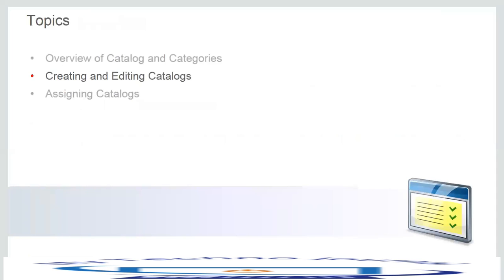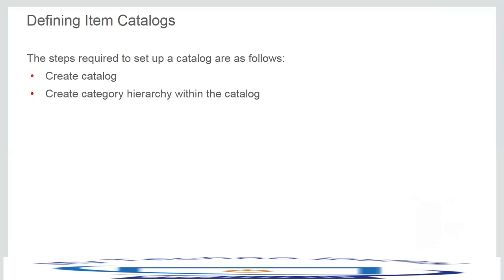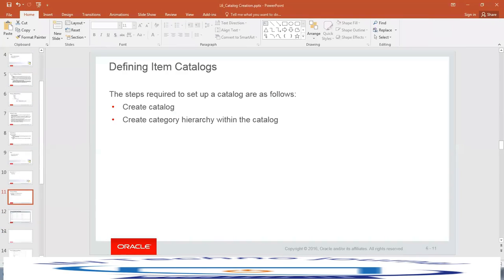The next topic is on how to create and edit catalogs. There is a demonstration, 6-1. As part of this demonstration, we will see how to create a catalog from the product information management work area. Before we proceed, let us go through the instance and see it ourselves how to create a catalog.